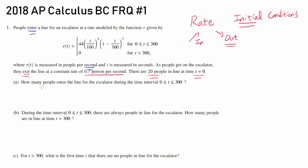The first one, how many people are entering the line for the escalator from 0 to 300? Well, this is the rate. And since this is the rate at which people are entering, we can safely assume that this rate is always going to be positive for t values between 0 and 300. And it is. You can test it out if you want to. But since the rate is positive, we can simply integrate it from 0 to 300.